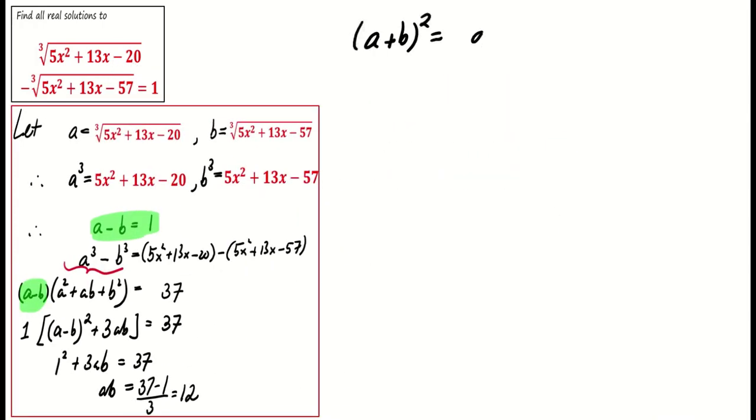Now note that (a + b)² = (a - b)² + 4ab, which evaluates to 49, or 7².